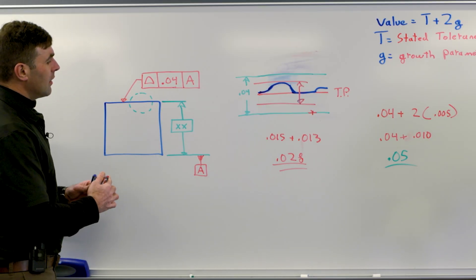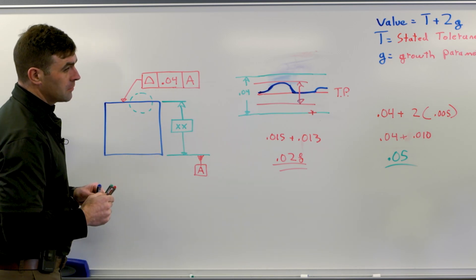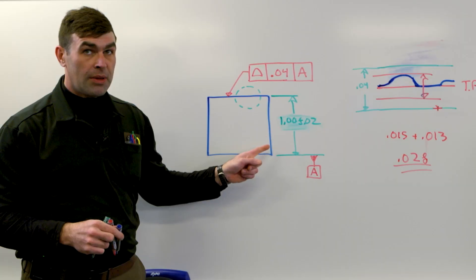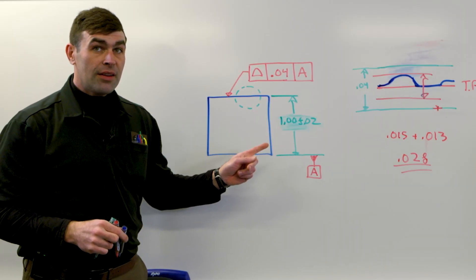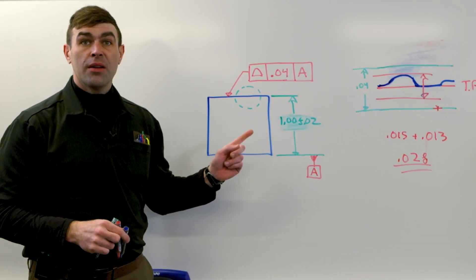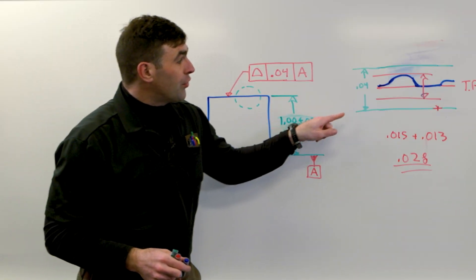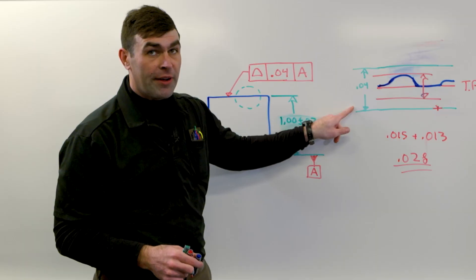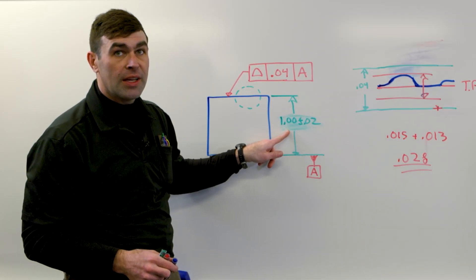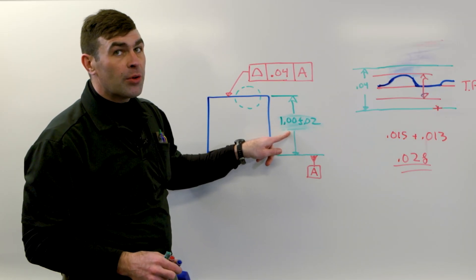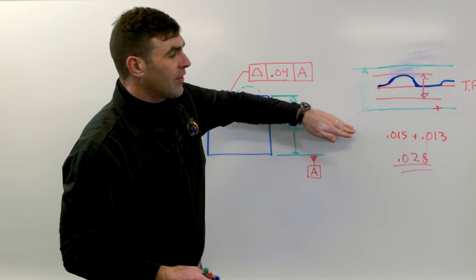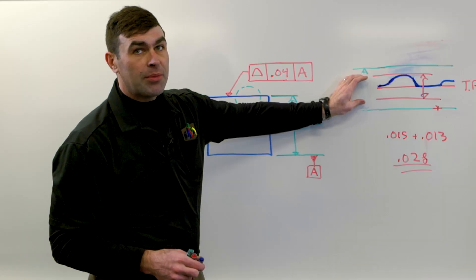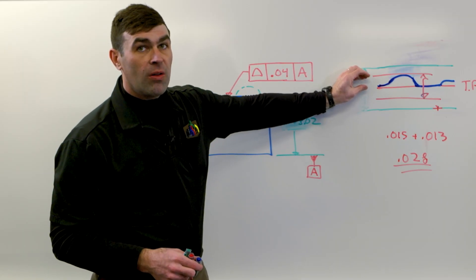Now, real quick, if instead of a basic dimension, it's a plus or minus dimension, this now gets calculated like parallelism. These two planes are no longer centered on a true profile. The true profile is essentially variable. It can move around. So you're checking the profile. You don't have this fixed tolerance zone boundary. You're going to collapse these planes all the way, right?